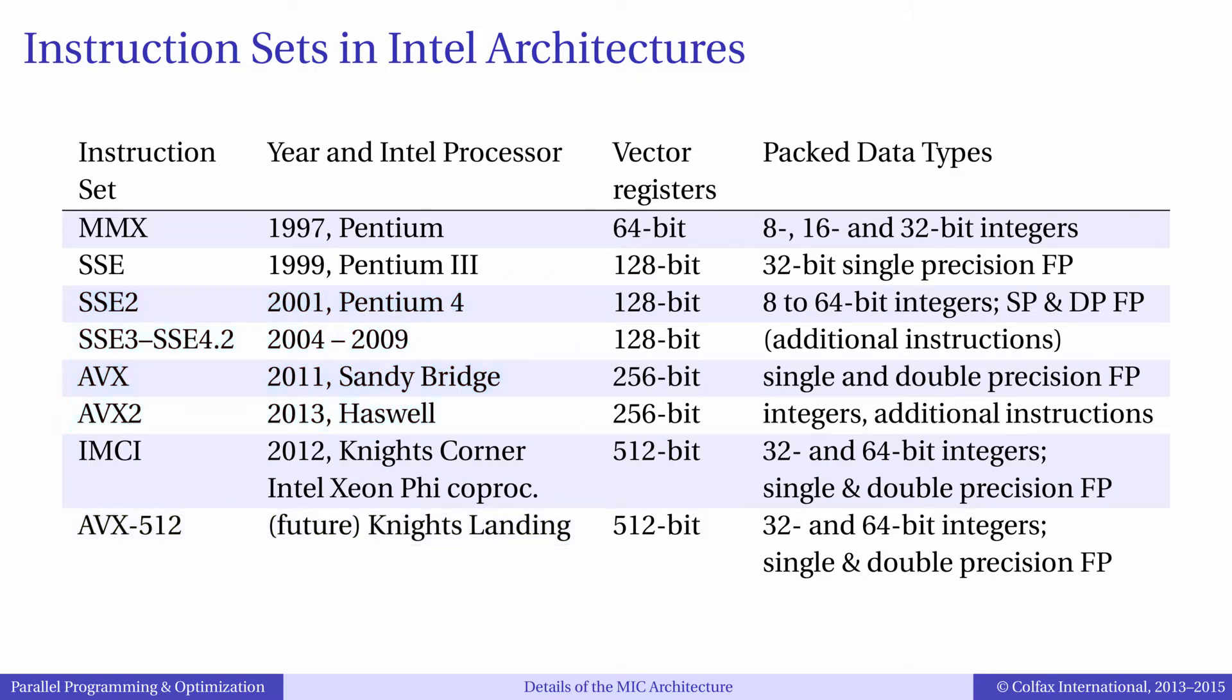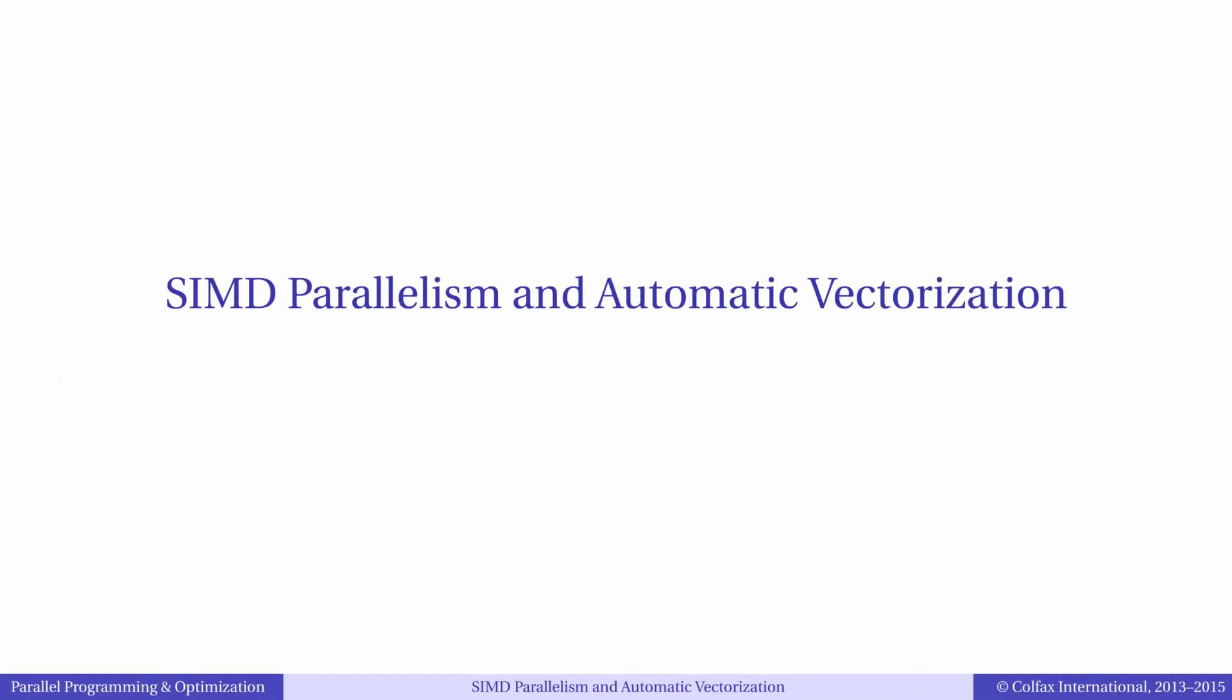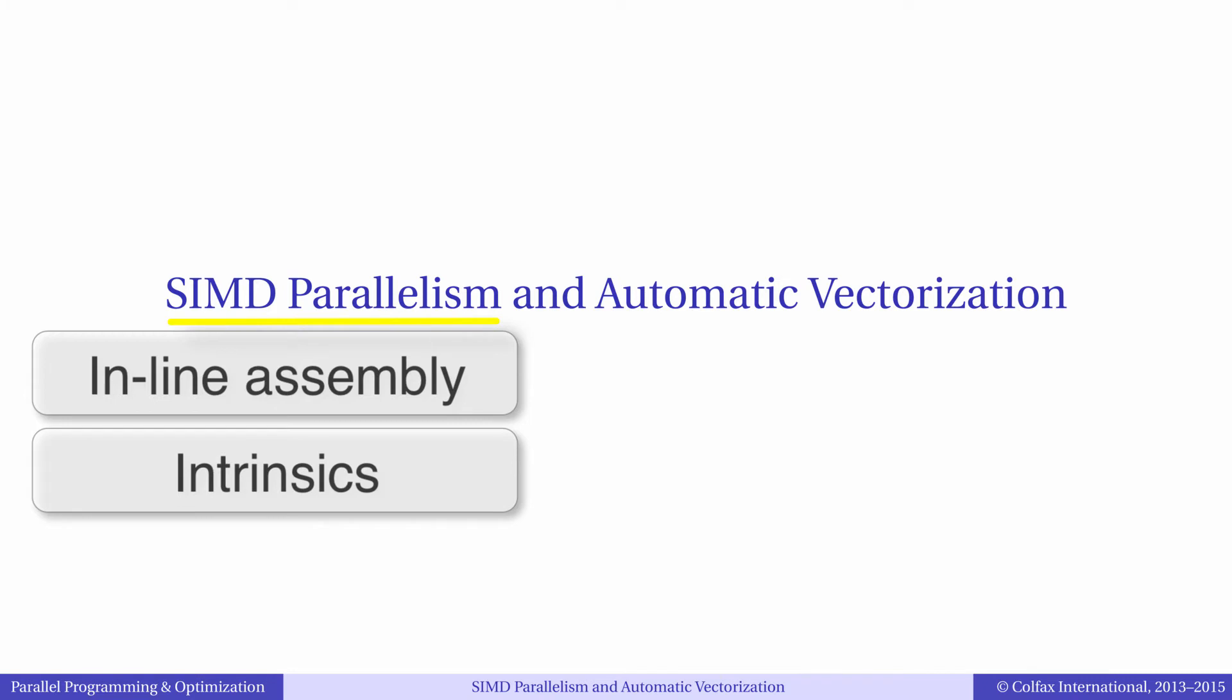We are beginning to learn how to express data parallelism in code. There are two fundamentally different approaches. One approach is to explicitly call the processor's vector instructions using assembly or special functions called intrinsics. The other approach is to express data parallel loops in a high-level language such as C, C++, and Fortran in a way that allows the compiler to use vector instructions for those loops.